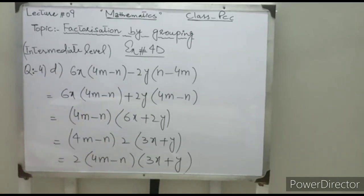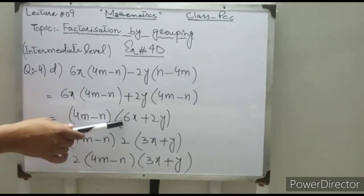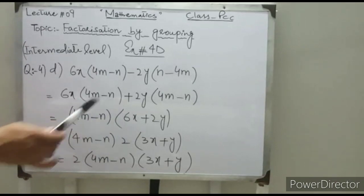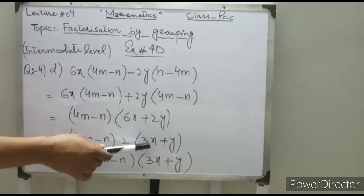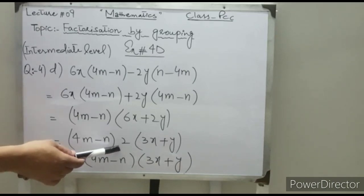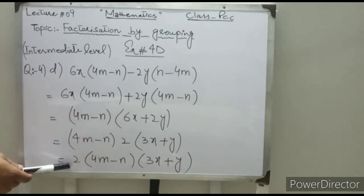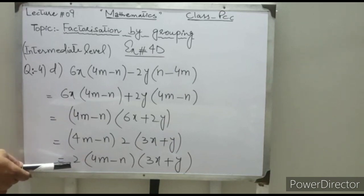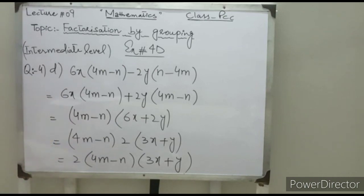In the last factor, 2 is common again. Take 2 in front of these two factors, so the final answer is 2(4m minus n)(3x plus y).